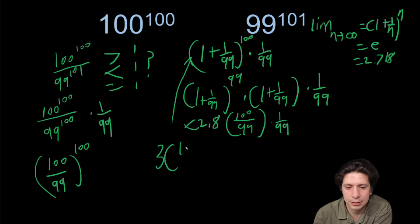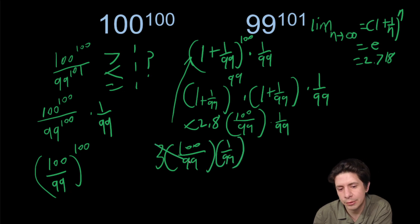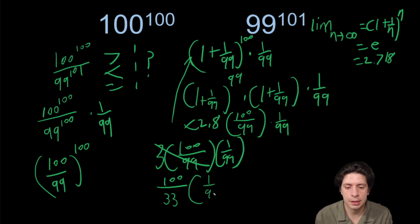We'd have 3 times 100 over 99 times one over 99. The 3 and the 99 would cancel, and we would be left with 100 over 33 times one over 99.